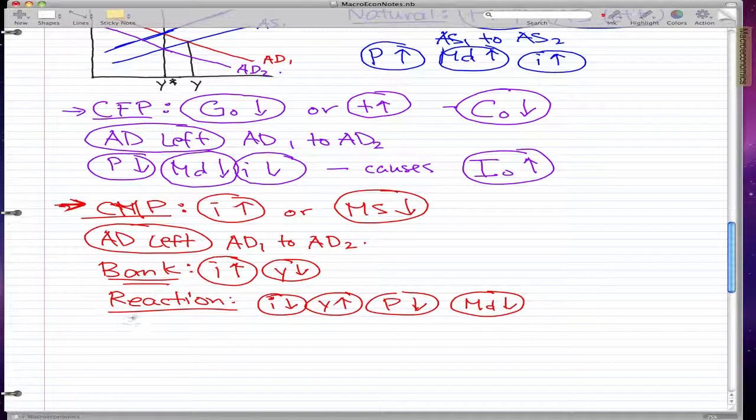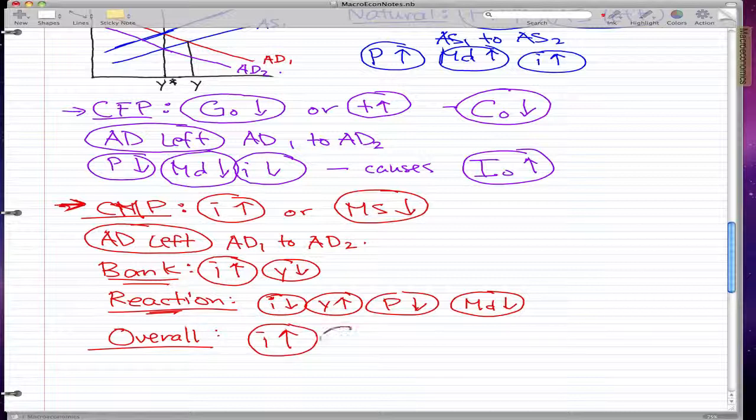And that's the reaction, but we also know that the reaction is never as strong as the bank. So overall, what happens is interest rises and Y decreases from Y to Y star.